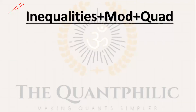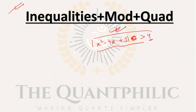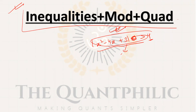This topic is VVIP; expect a lot of questions, including tough-level ones. Basic questions are also there — for example, you may be given |x²+3| < 0, which can't be true, or |x²+3| > 3. Practice these types carefully. The combination of modulus plus quadratic questions is very common.